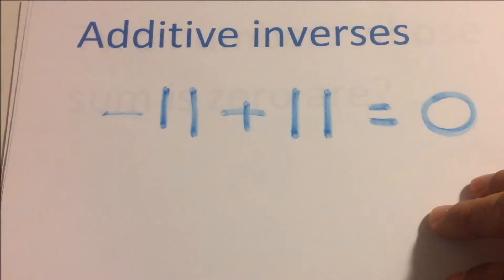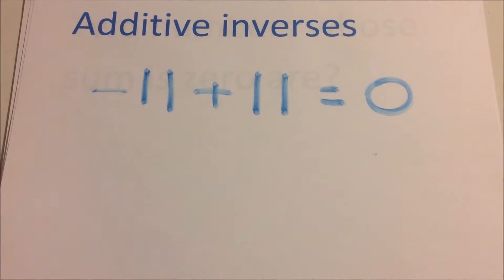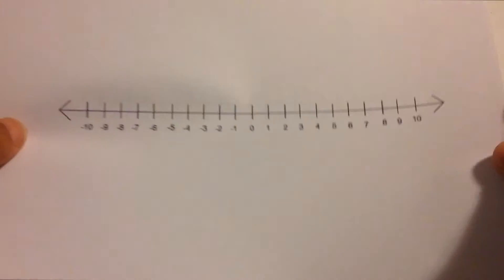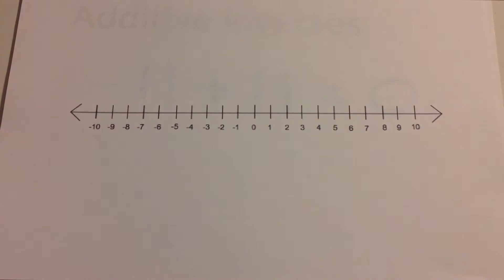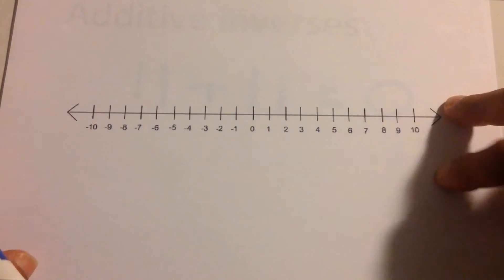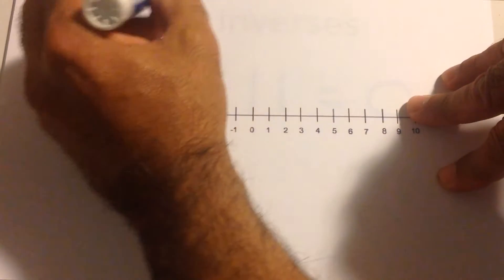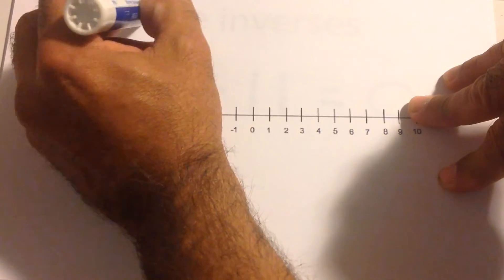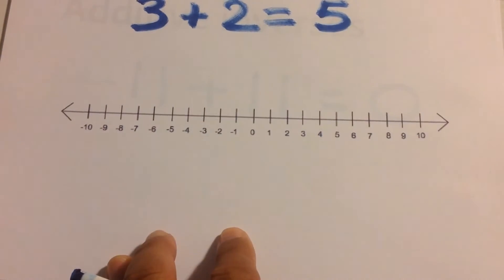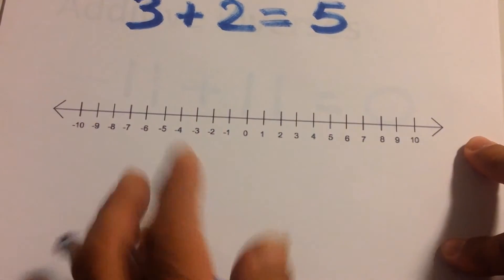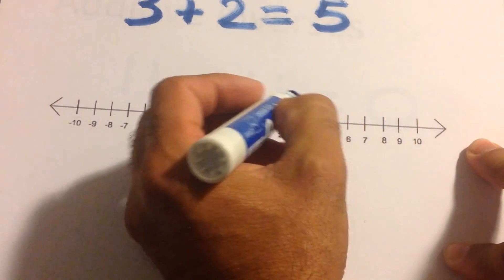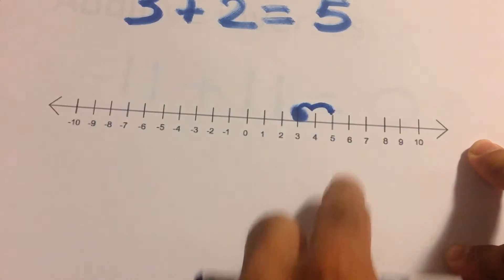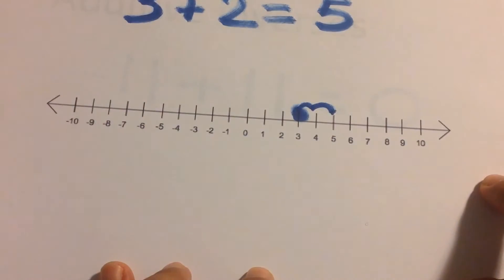One way we can add integers is with a number line. For positive integers, we already know how to do this — we've been doing it since first grade. Like three plus two equals five. On the number line, start at three, and with a plus sign you go to the right two spaces, and you land on five.